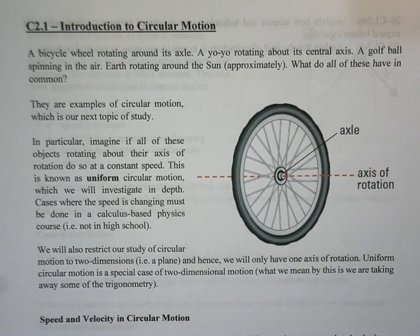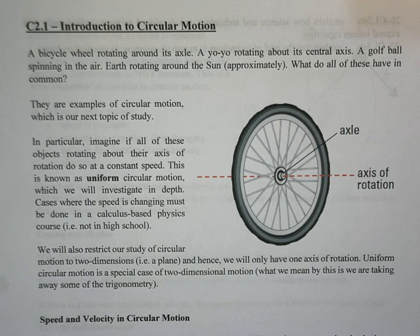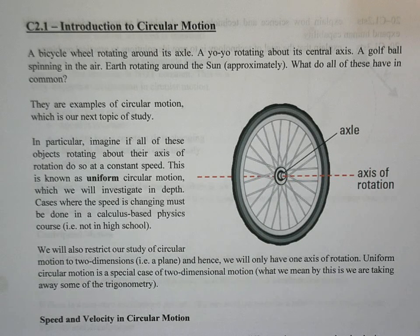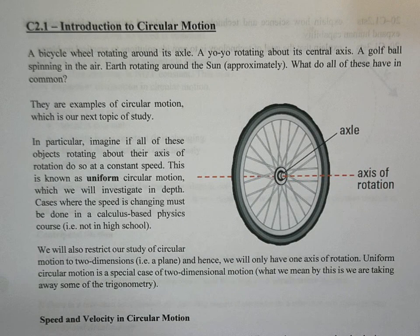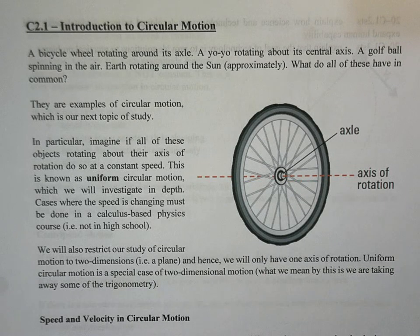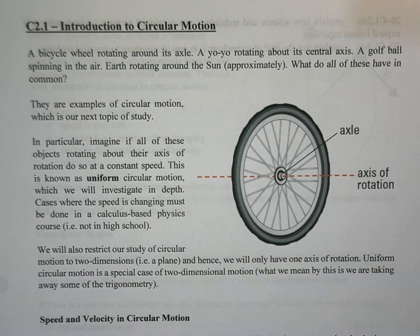You already have some degree of knowledge of circular motion, maybe not explicitly in terms of physics equations, but you're used to things traveling in circles — like a bike tire, a car tire, or if you're spinning something on a string. These are all examples of circular motion, and what we want to look at is things traveling in a circle.